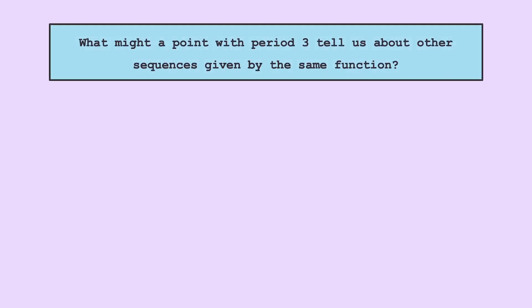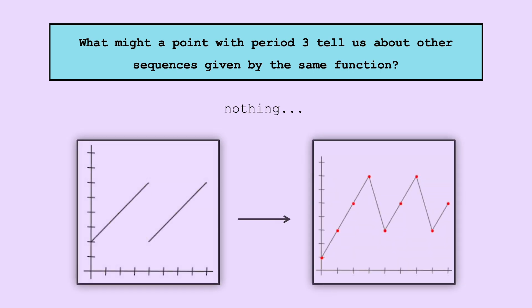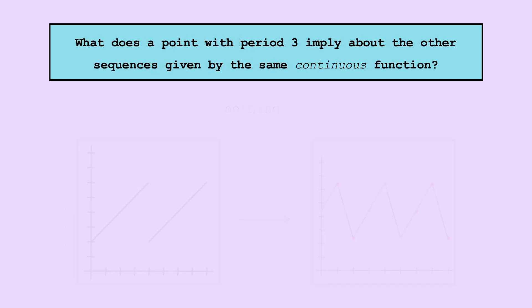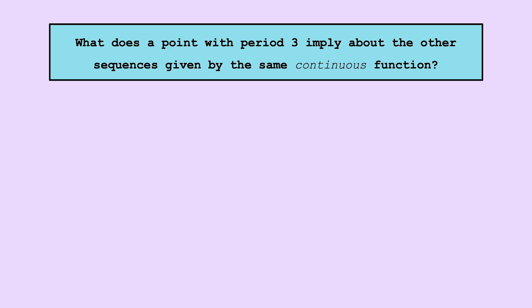What might a point with period 3 tell us about other sequences given by the same function? As you may initially guess, absolutely nothing. You can probably come up with all sorts of weird functions where one point with period 3 has absolutely no significance on the other points in the function. Okay, this probably isn't too surprising, but here's a follow-up question. Let's say we had a continuous function with a point with period 3. What does a point with period 3 imply about the other sequences given by the same continuous function?